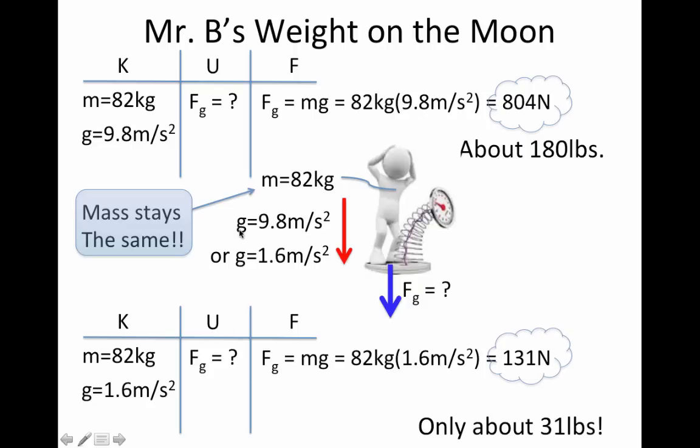Now, if I'm on the moon, the acceleration due to gravity is a lot less, 1.6 meters per second squared. And so when I do the same exact problem, but plug in 1.6 meters per second squared instead of 9.8, wow, I only weigh 131 newtons, and that is only about 31 pounds. So I could really bounce around like those astronauts easily, because I would be strong enough to carry 180 pounds, like I always do, but I'd only weigh 31. That's why they were bouncing around so easily.